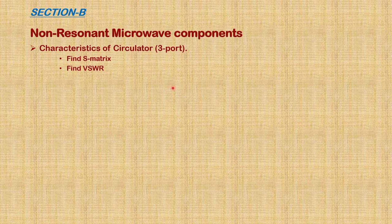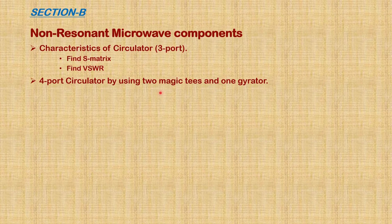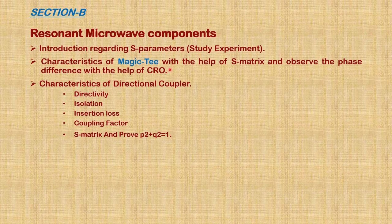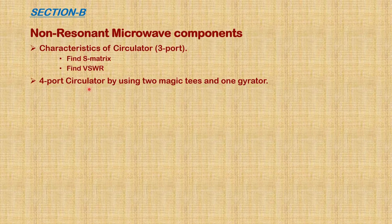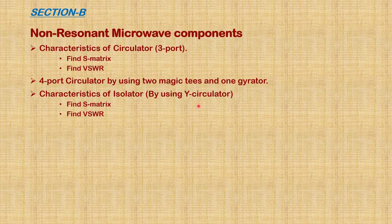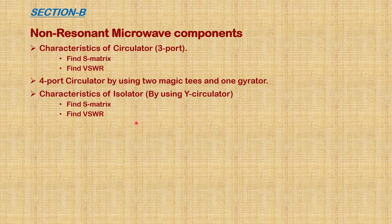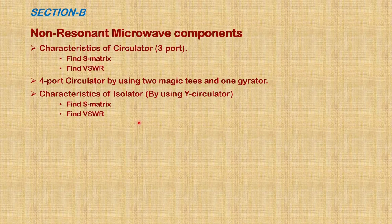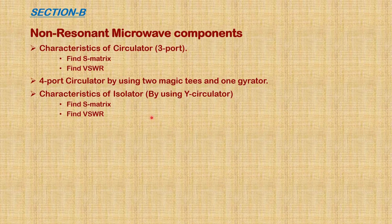For this circulator, we find the S-matrix and VSWR. Next experiment is the four-port circulator, by using two magic T's and one gyrator. Using knowledge from the magic T experiment, we implement a four-port circulator. The last experiment is the isolator. By using a Y-circulator or T-junction circulator, an isolator is a two-port unidirectional component. From the three ports of the circulator, one port is matched with a load, and the other two remaining ports are utilized as input and output. This is how we implement an isolator.